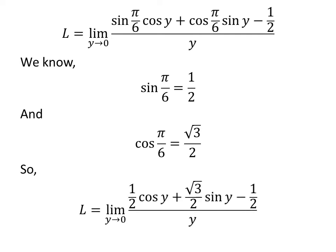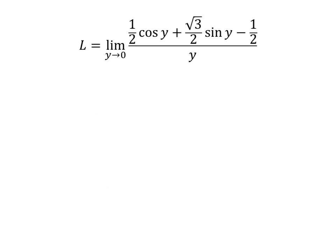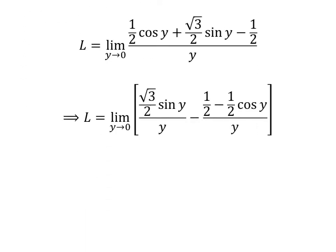Plugging the above values in limit L gives us: L is equal to the limit of half times cosine of y plus square root of 3 upon 2 times sine of y, minus half, upon y, as y approaches 0. We can write the above fraction as a difference of two fractions: L is equal to the limit of square root of 3 upon 2 times sine of y upon y, minus half minus half times cosine of y upon y, as y approaches 0.